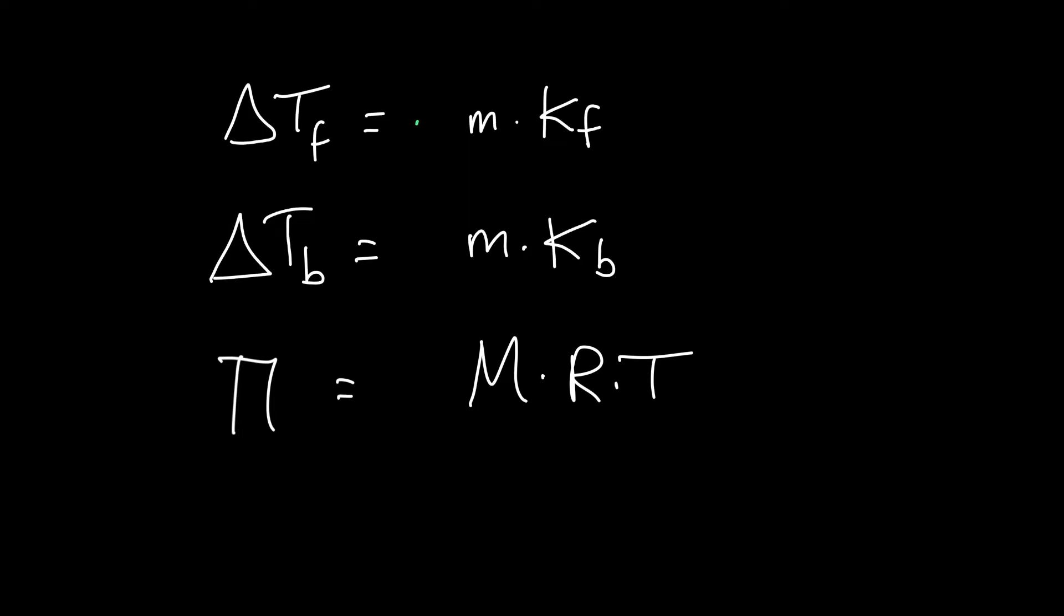And what we're going to do is we're going to fix all these equations to include that Van't Hoff factor. And basically all we're doing is we're saying that the concentration of things in solution is the Van't Hoff factor times by the concentration of the sodium chloride or the calcium chloride or the iron-3 nitrate. And this is going to take into account that when it dissolves, it breaks into this many pieces.